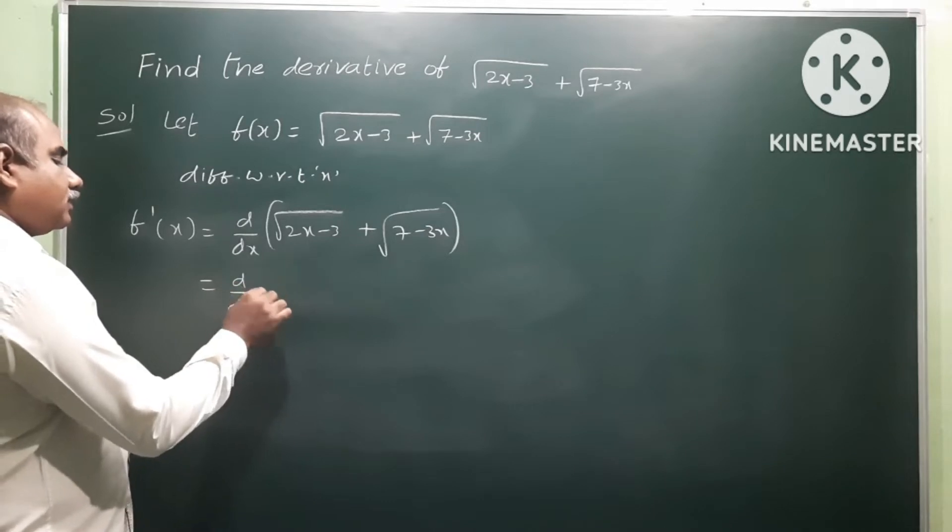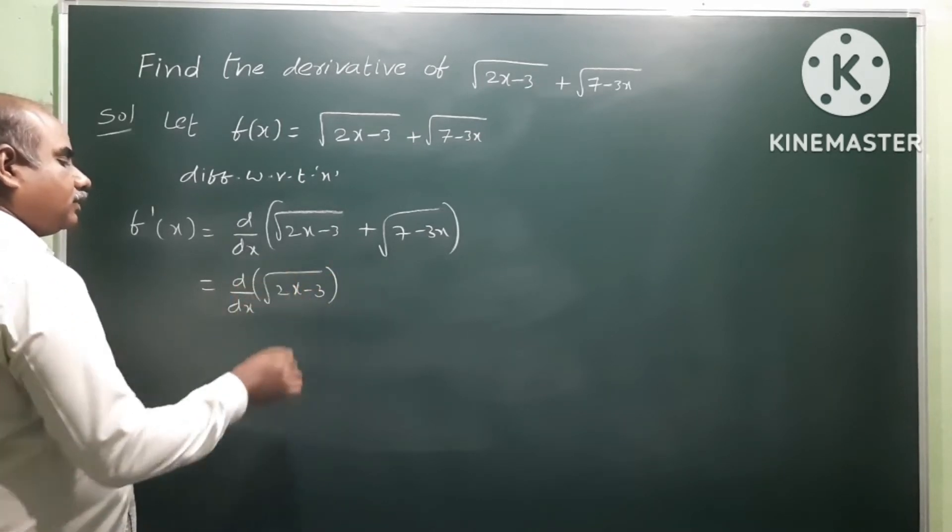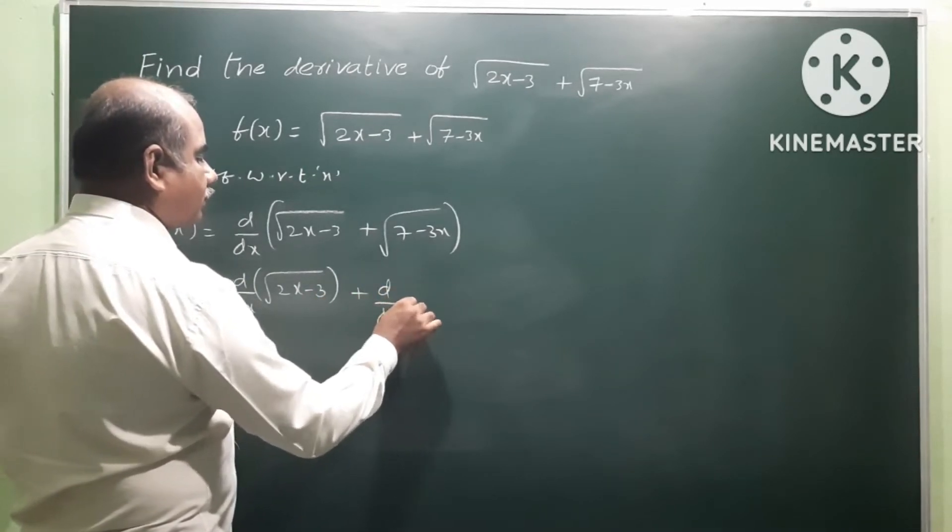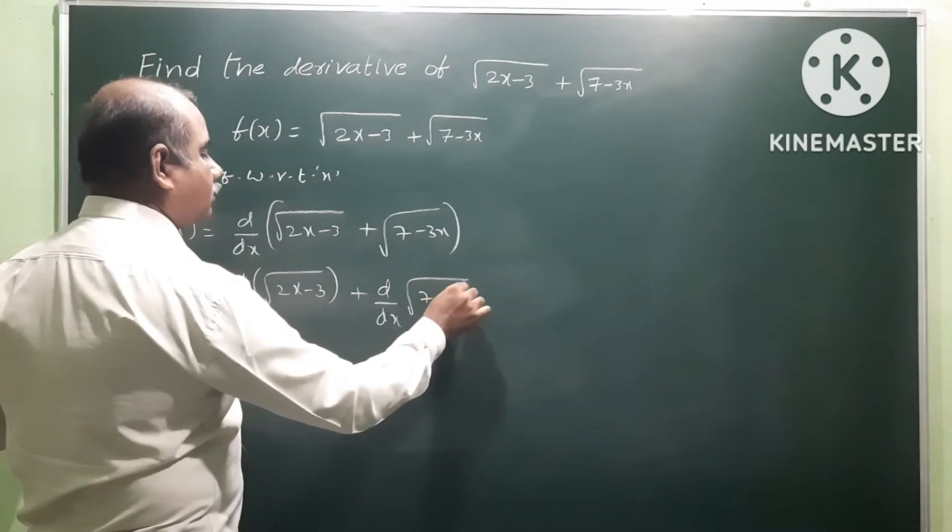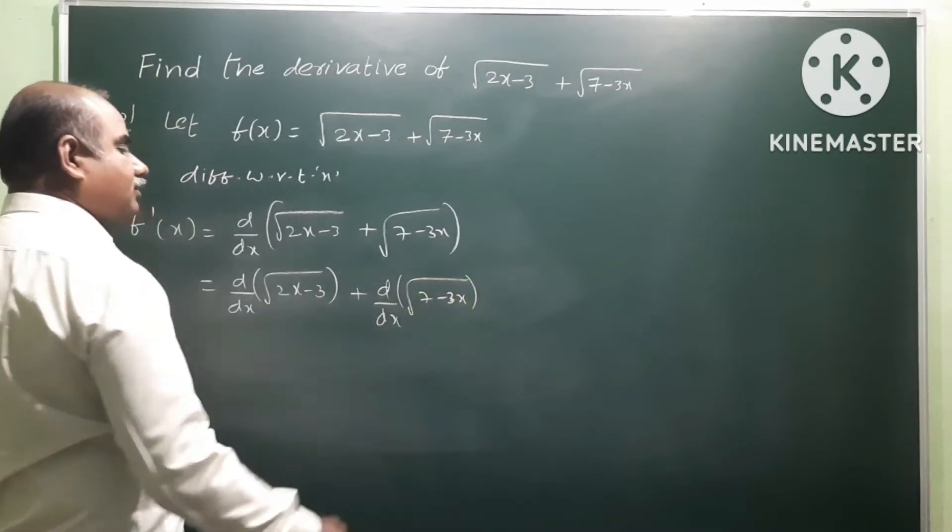So d/dx of square root of 2x minus 3 plus d/dx of square root of 7 minus 3x. When we have any terms like this, we can represent the derivative separately for each.